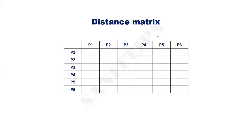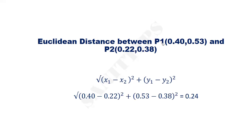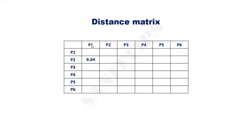First, we need to compute the distance matrix. The Euclidean distance between point P1 and P2 is given by the square root of (x1 minus x2) squared plus (y1 minus y2) squared. Hence, the Euclidean distance between point P1 (0.40, 0.53) and point P2 (0.22, 0.38) equals the square root of (0.40 minus 0.22) squared plus (0.53 minus 0.38) squared, which equals 0.24. Similarly, compute the Euclidean distance between all pairs of points.